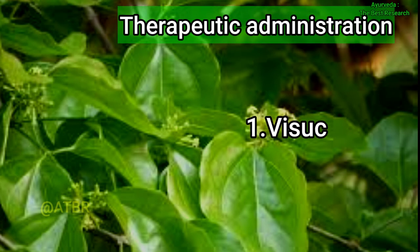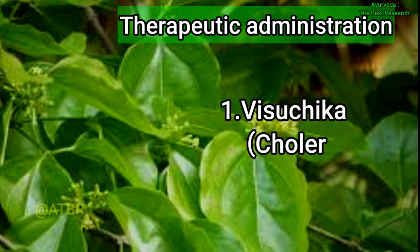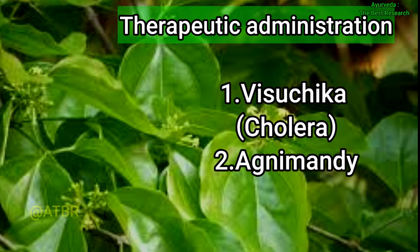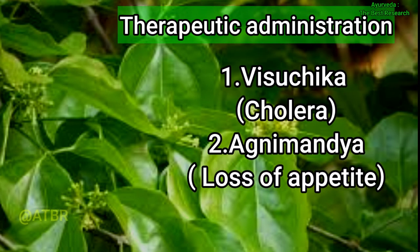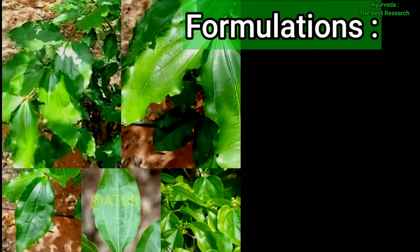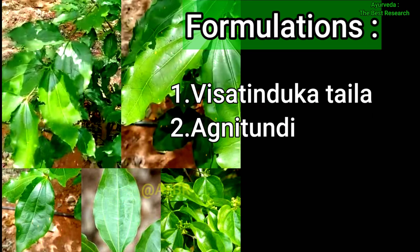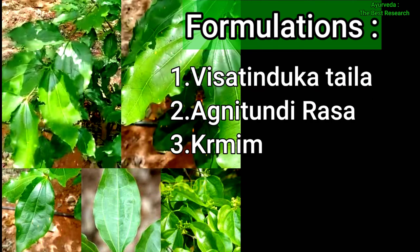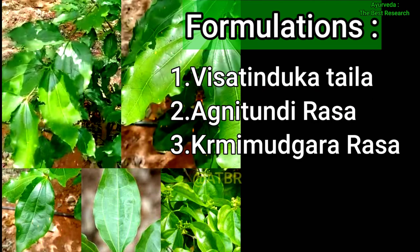Amayika Prayoga, that is therapeutic administrations, are: vishuchika (cholera) and agnimandya (loss of appetite). Yogas, that is formulations, include: vishuchika thaila for vataratha and kushta; agnitundi rasa for agnimandya; and krumimudgara rasa for krumi (intestinal worms).